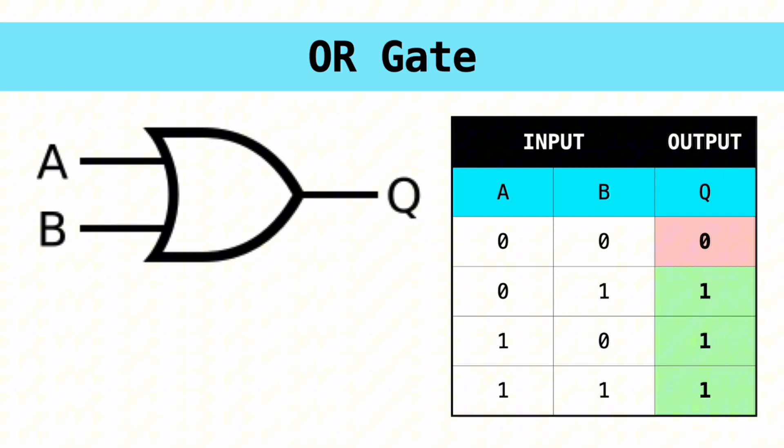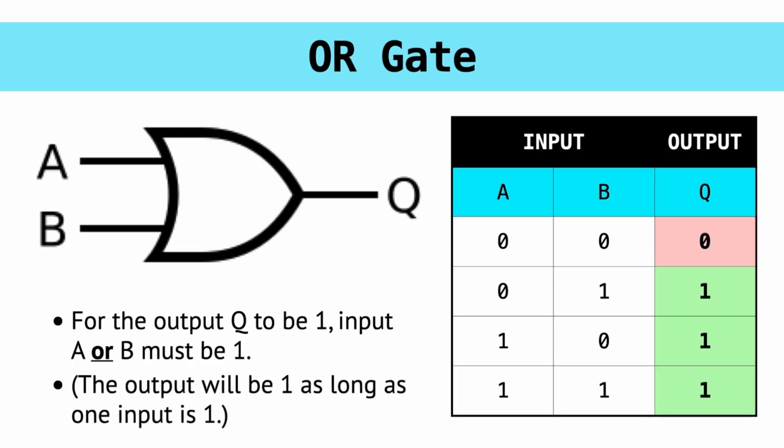Next is the OR gate. With this gate, as long as one of the inputs is 1, the output will be 1. So input A can be 1, or input B can be 1, or both inputs can be 1, which is why it's called the OR gate.